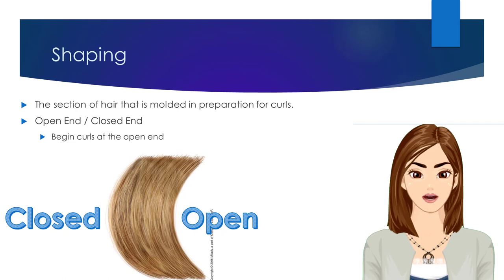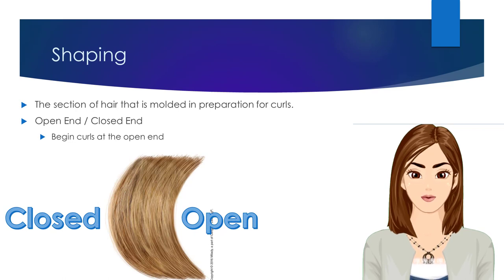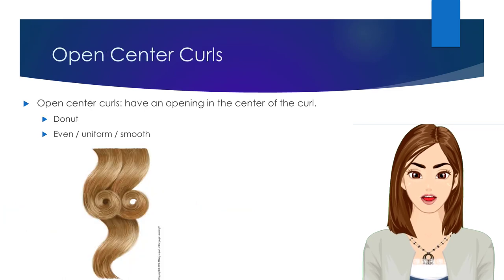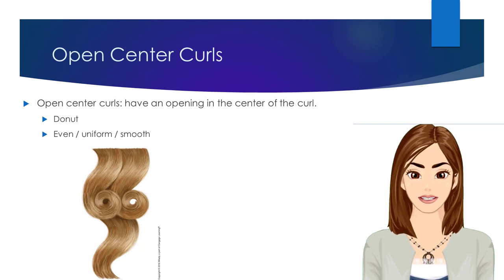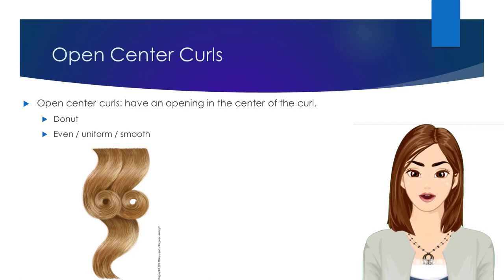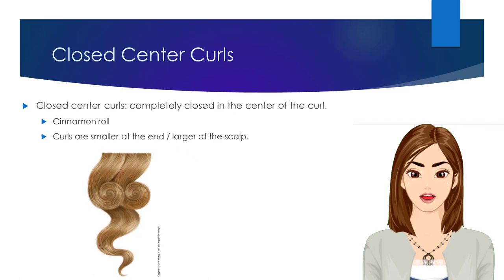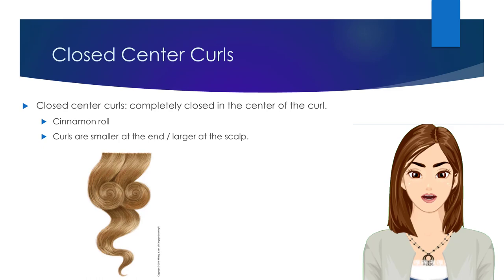Finger waves are an example of a shaping; however, there are other types of shapings as well. Shapings will have an open end and a closed end. You should always begin pin curls at the open end of a shaping. Open center pin curls have an opening in the center of the curl, similar to a donut. Open center curls produce even, uniform, and smooth curls, meaning that curls created with an open center will have the same size of curl or wave pattern throughout the length of the hair strand. Closed center pin curls are completely closed in the center of the curl, similar to that of a cinnamon roll. Closed center curls have a smaller diameter at the ends of the hair, growing in size towards a larger diameter at the scalp.